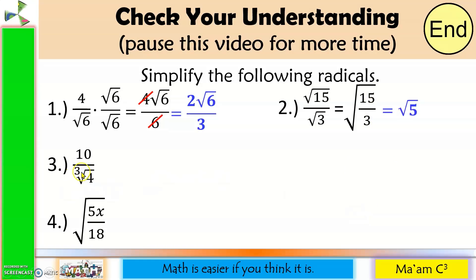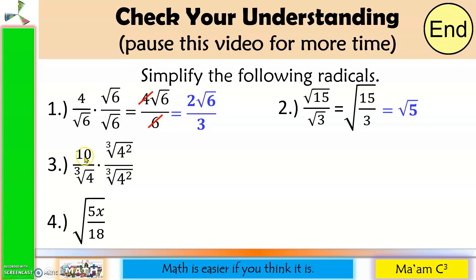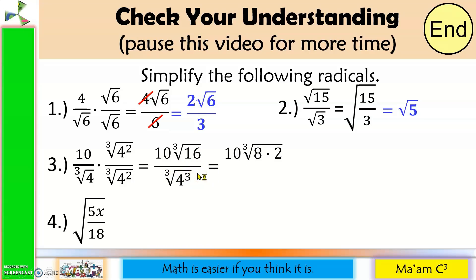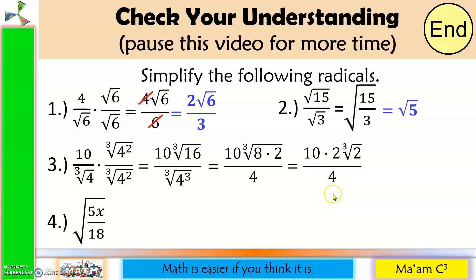Number 3: the index is 3 and the exponent of 4 is 1, so we need 2 more. Multiply numerator and denominator by the cube root of 4 squared. That gives 10 times cube root of 4 squared in the numerator; 4 squared is 16, so it's 10 cube root of 16. For the denominator, 1 + 2 = 3, giving the cube root of 4 cubed, which equals 4. Since 16 = 8 × 2 and the cube root of 8 is 2, factor it out: 10 × 2 · cube root of 2 over 4. 10 × 2 = 20, and 20 ÷ 4 = 5. Final answer: 5 cube root of 2.